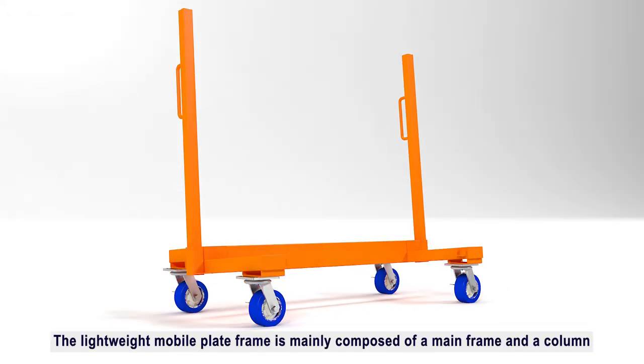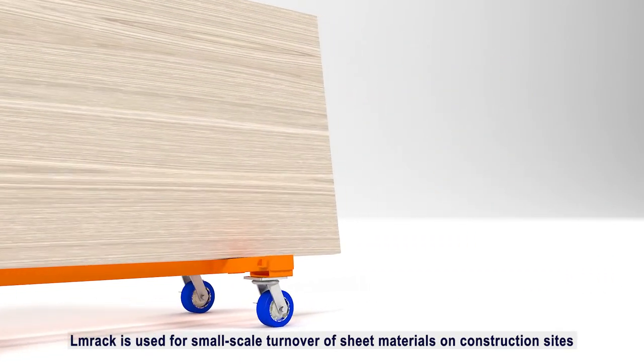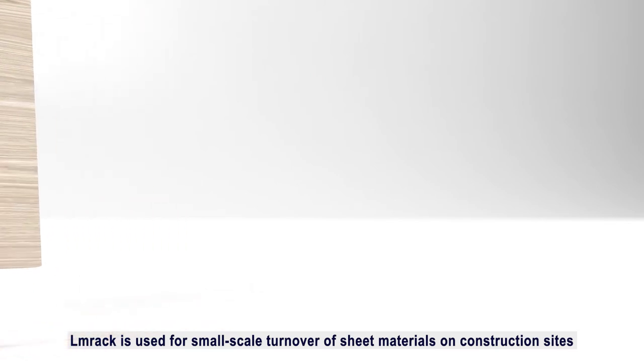The lightweight mobile plate frame is mainly composed of a main frame and a column. Lmrack is used for small-scale turnover of sheet materials on construction sites.